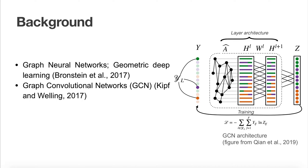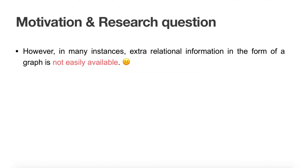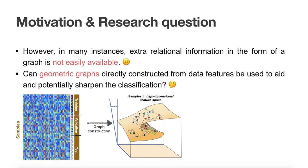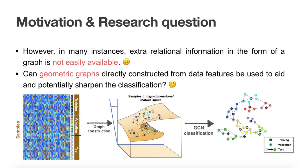In many instances, extra relational information in the form of a graph is not easily available. Here, we ask that, even in the typical case where the dataset consists of sample features only, is it still possible to use the feature vectors to obtain a geometric graph that encapsulates the closeness or similarity between samples, and use this feature-derived graph within GCN to aid classification?